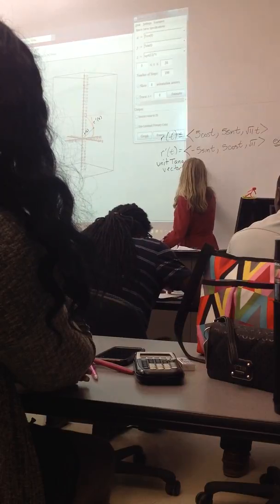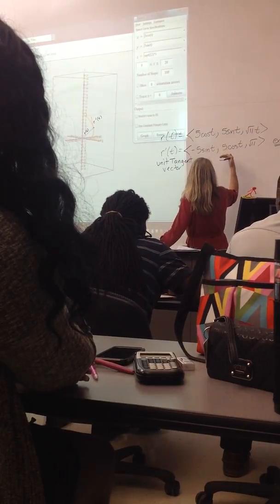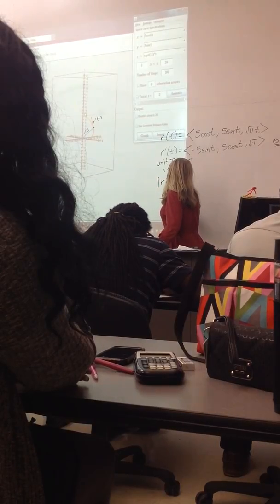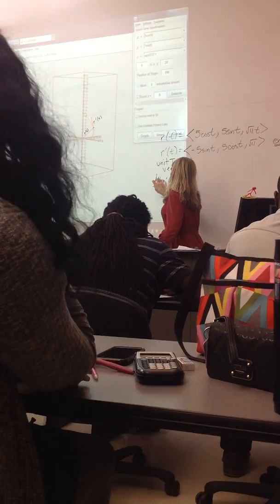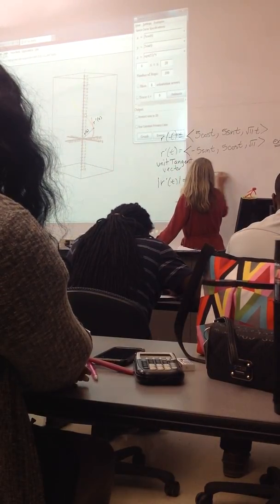So we make all vectors length 1 by dividing them by their lengths. So this particular space curve, the length of its tangent vector ended up being constant.